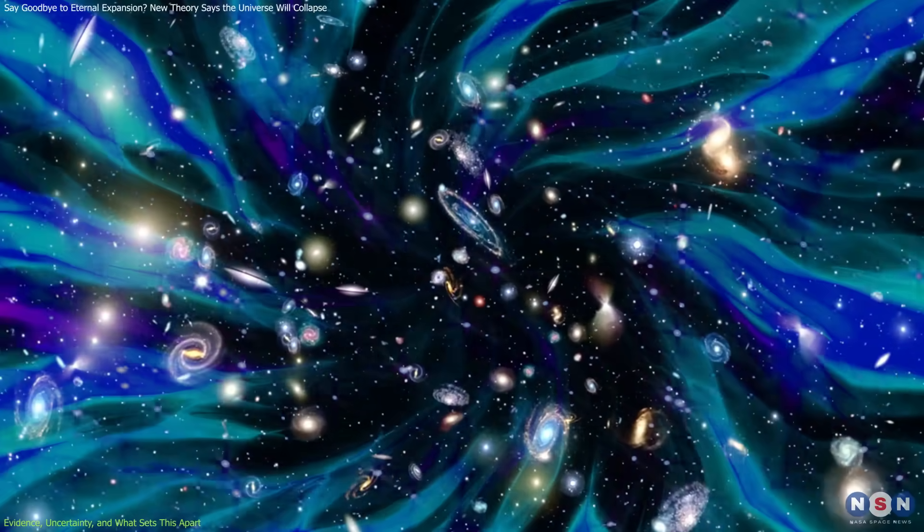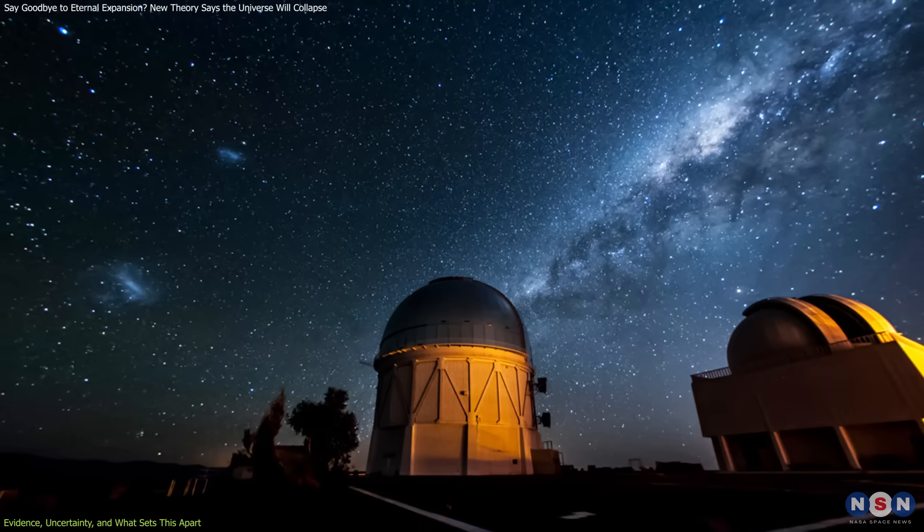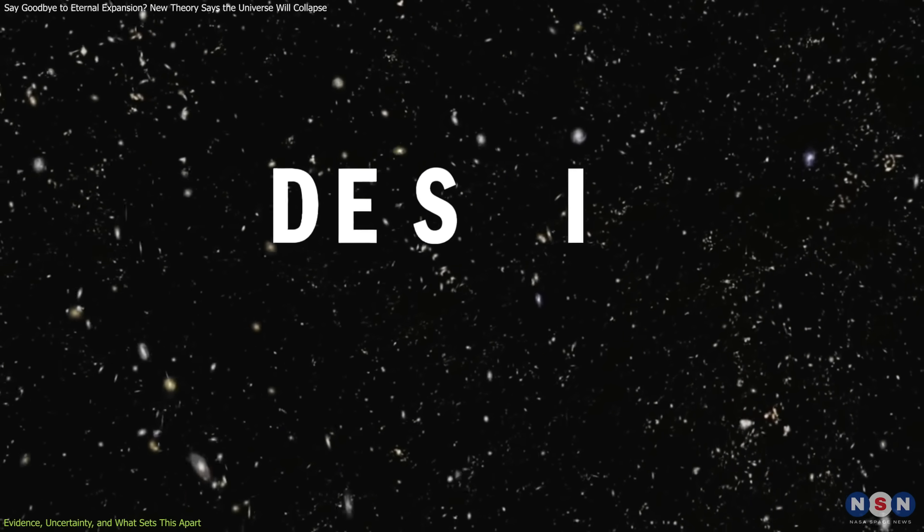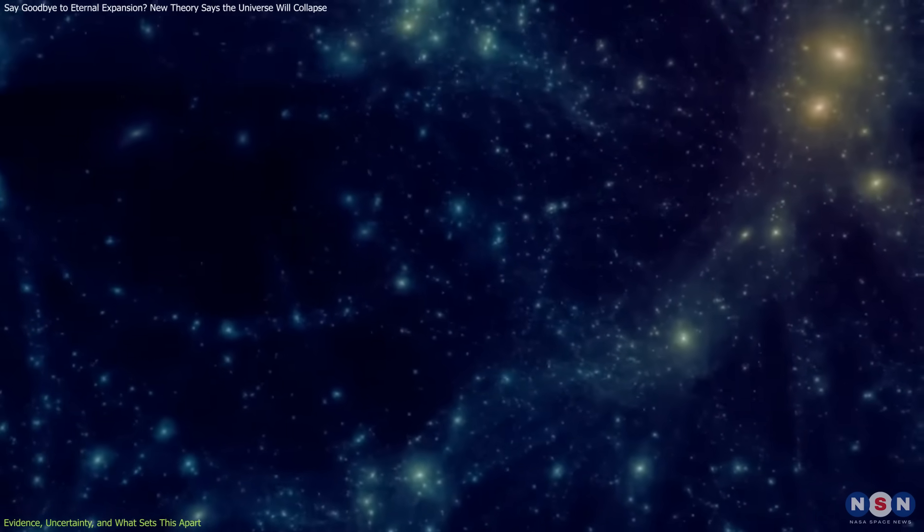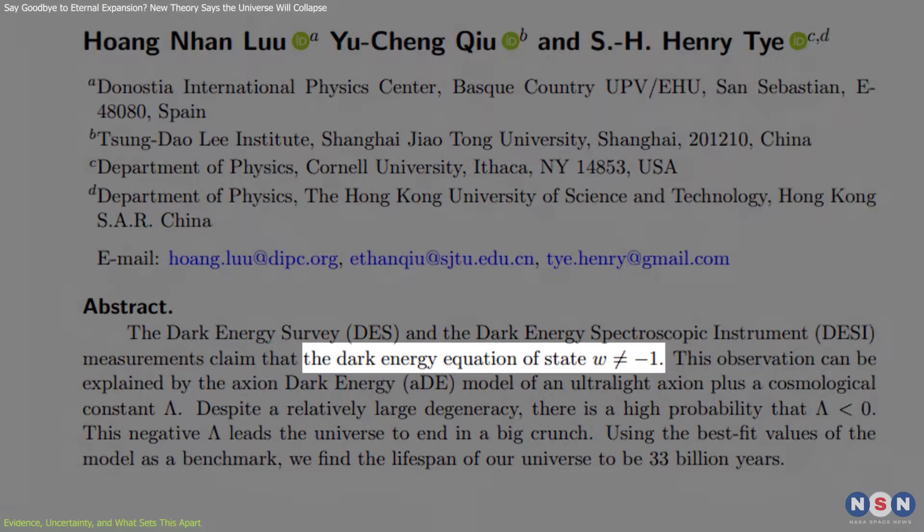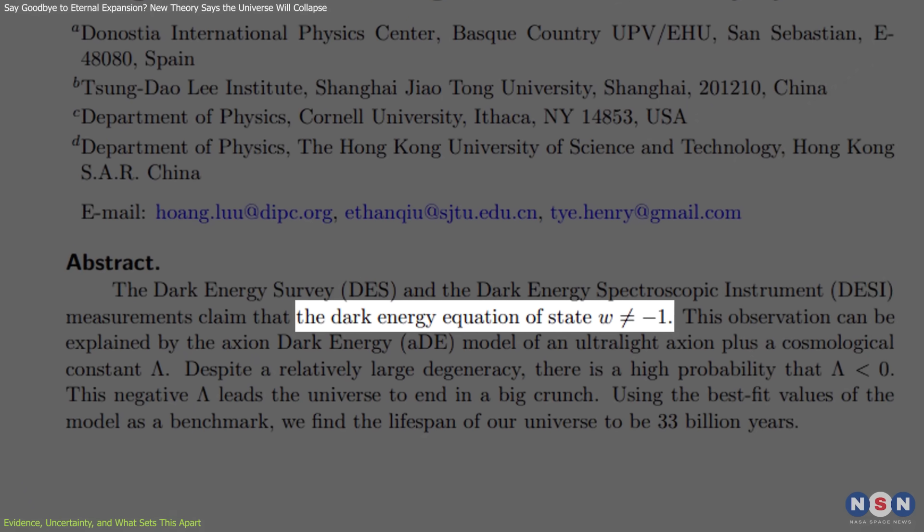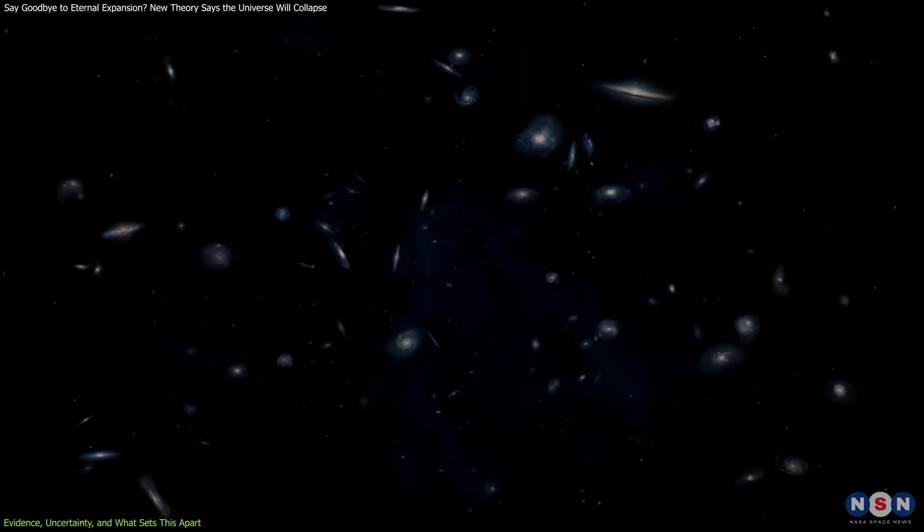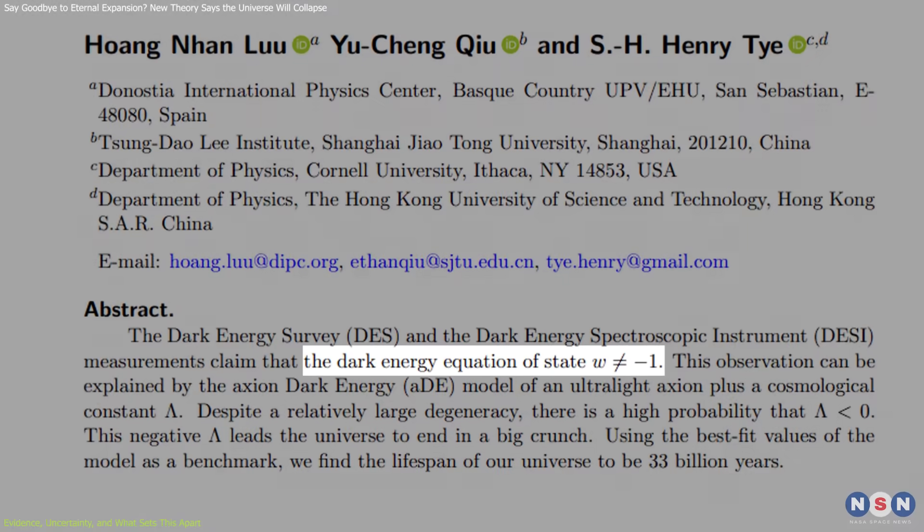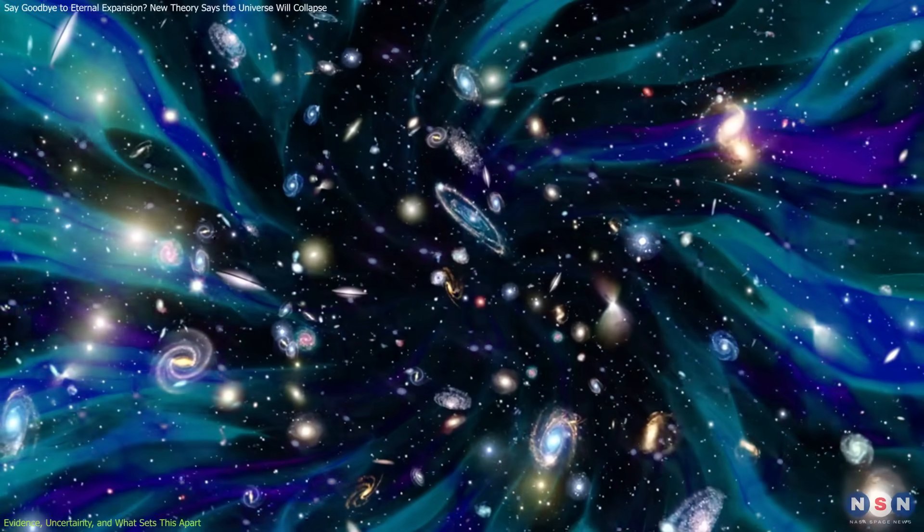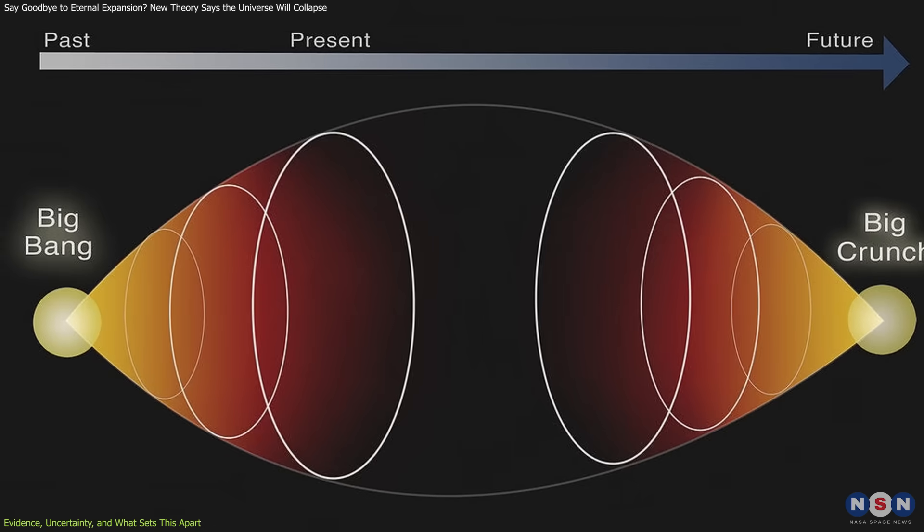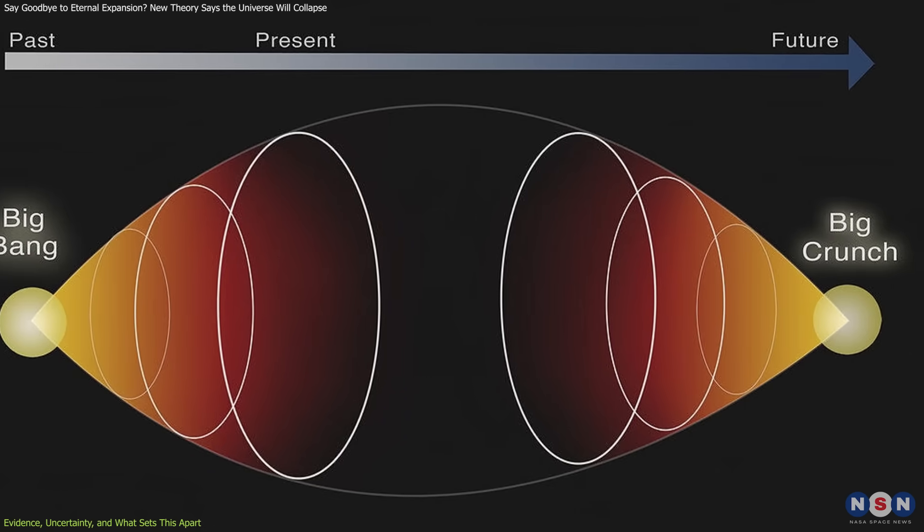What makes this model compelling is its link to observational data, especially from the Dark Energy Survey (DES) and the Dark Energy Spectroscopic Instrument (DESI). These surveys map the large-scale structure of the universe and track how galaxies move over cosmic time. From these datasets, researchers extracted the equation of state parameter for dark energy, symbolized as W. The value of W equals minus 1 matches a static cosmological constant. But if W is greater than minus 1, even slightly, it suggests that dark energy could be weakening. The DES and DESI findings don't prove this, but they raise the possibility, and the model described in the paper takes that possibility seriously, building a scenario around it.